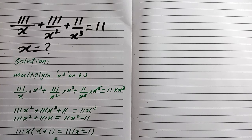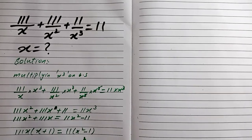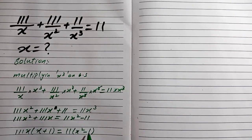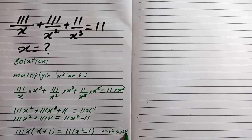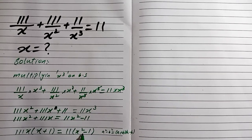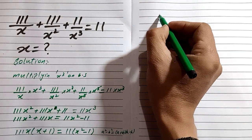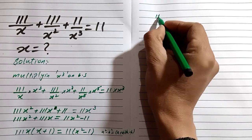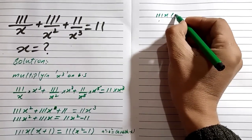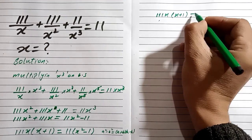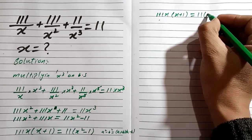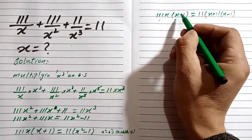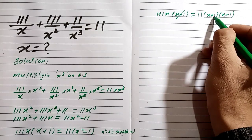We can see that x squared minus 1 follows the formula a squared minus b squared equals (a plus b)(a minus b). We apply this formula to our equation. So we have 111x times (x plus 1) equals 11 times (x plus 1)(x minus 1). Now x plus 1 appears on both sides and will be cancelled.